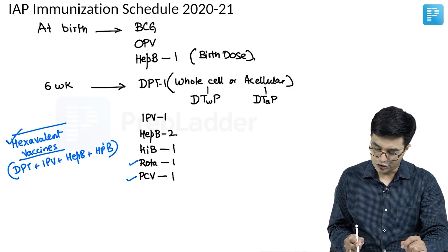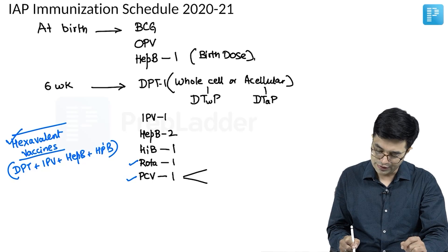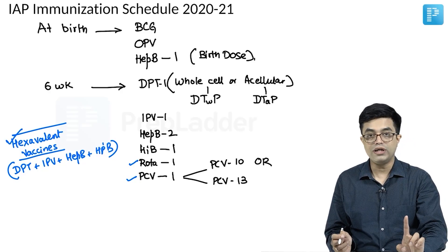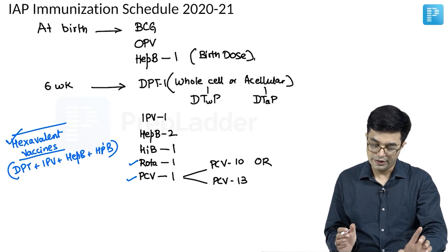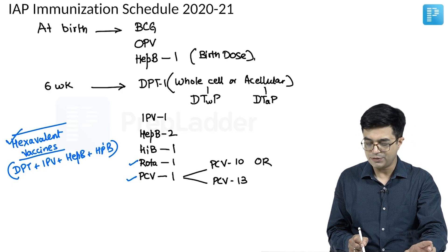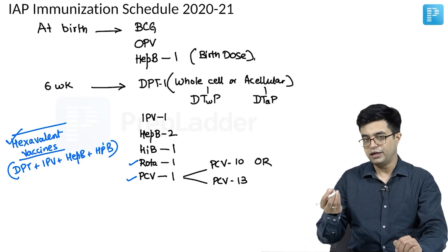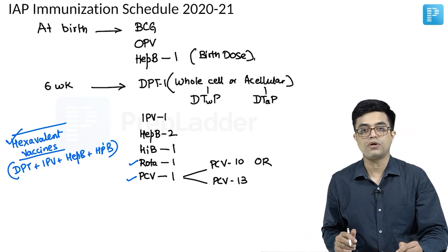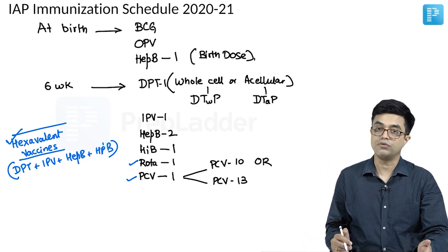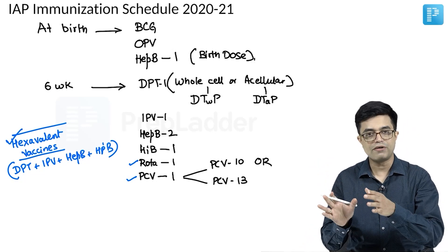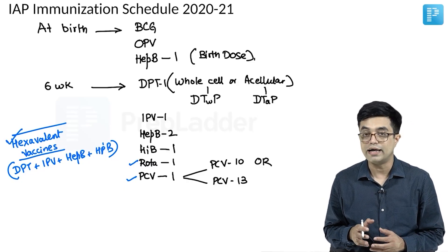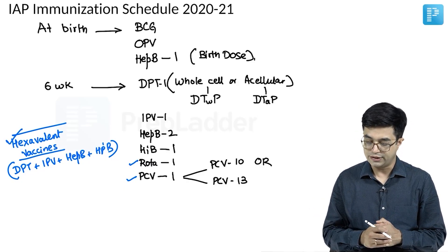According to the IAP schedule, you can use either PCV10 or PCV13. In the national immunization schedule, only PCV13 is recommended, but in the IAP schedule, you can use either PCV10 or PCV13. If you choose one vaccine — say PCV10 — then the subsequent doses should preferably also be PCV10. There are significant cost differences in the private sector, and that is why options are given in the IAP schedule.